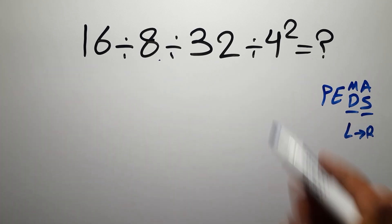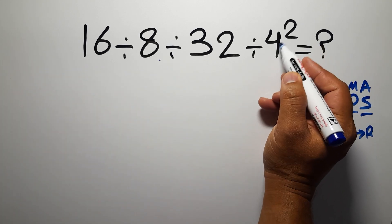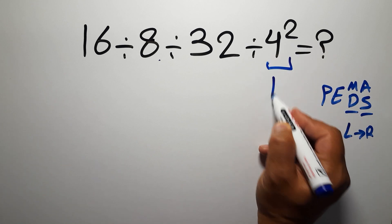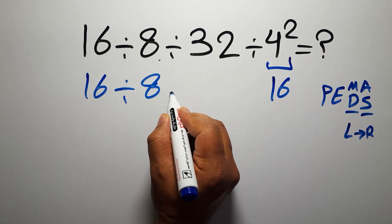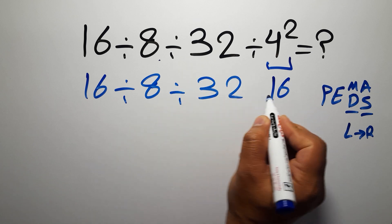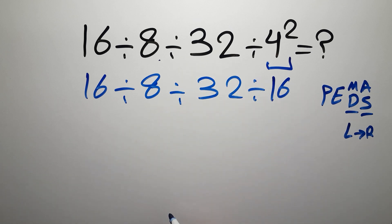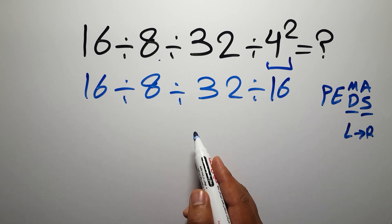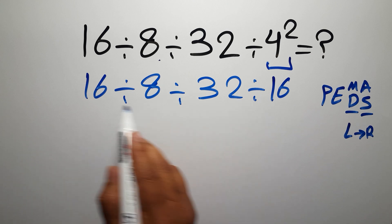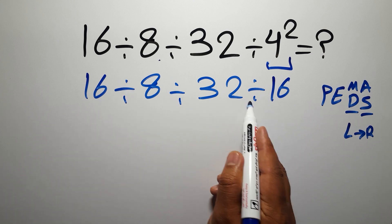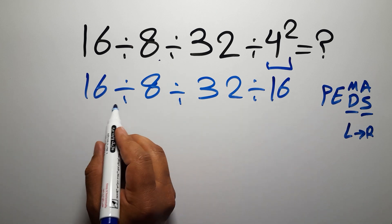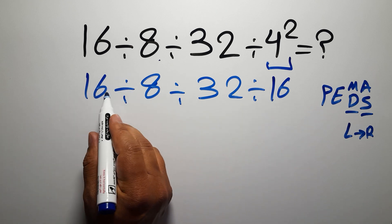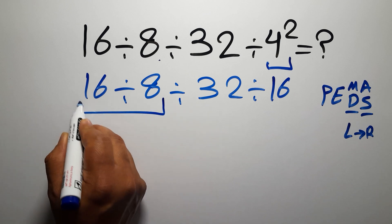So first, the exponent: 4 squared gives us 16. So we have 16 divided by 8, divided by 32, divided by 16. Now we have three divisions, and when we have more than one division in an expression we have to work from left to right. First division: 16 divided by 8 gives us 2.